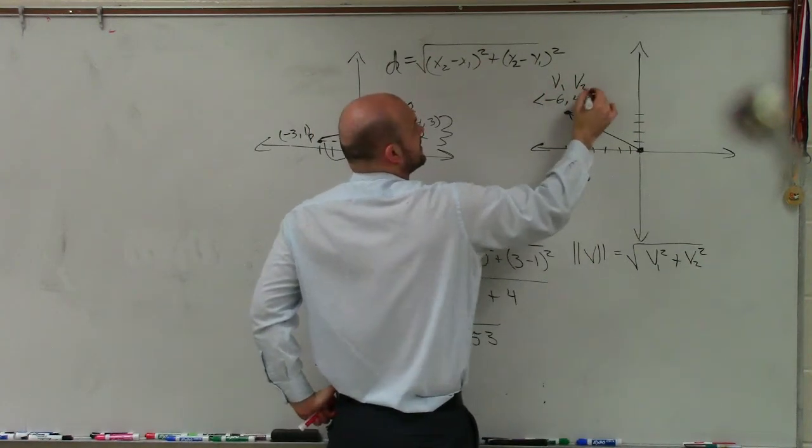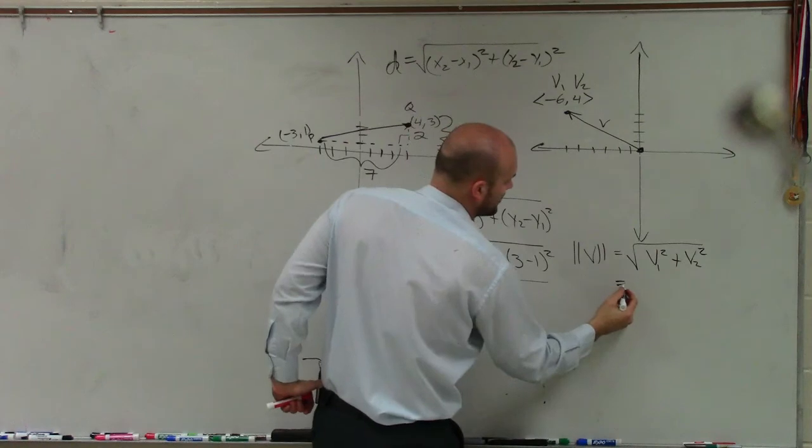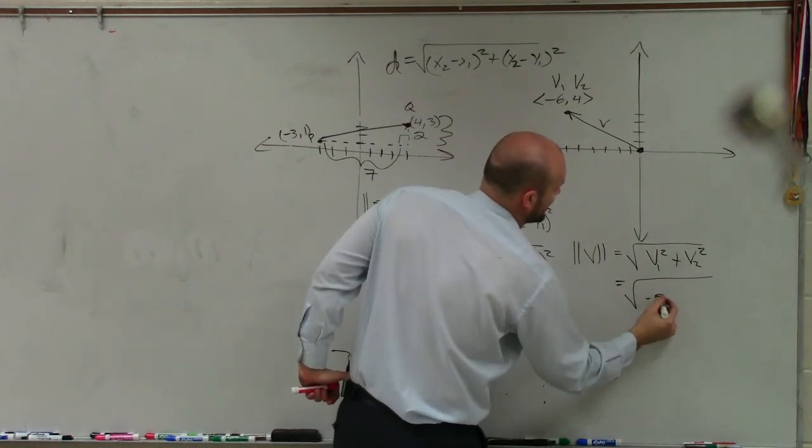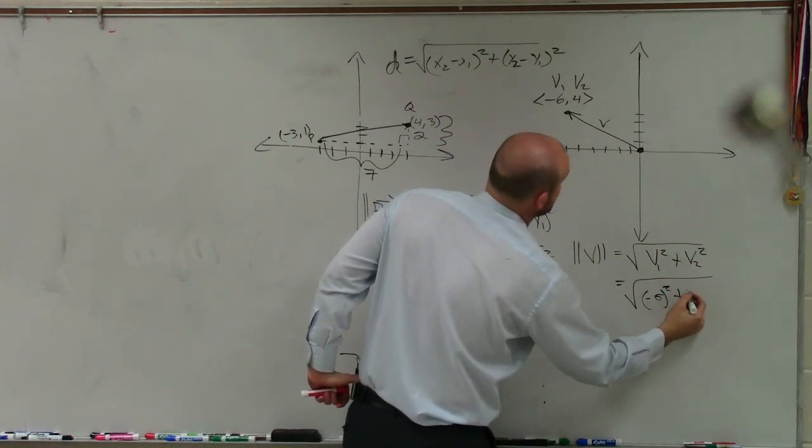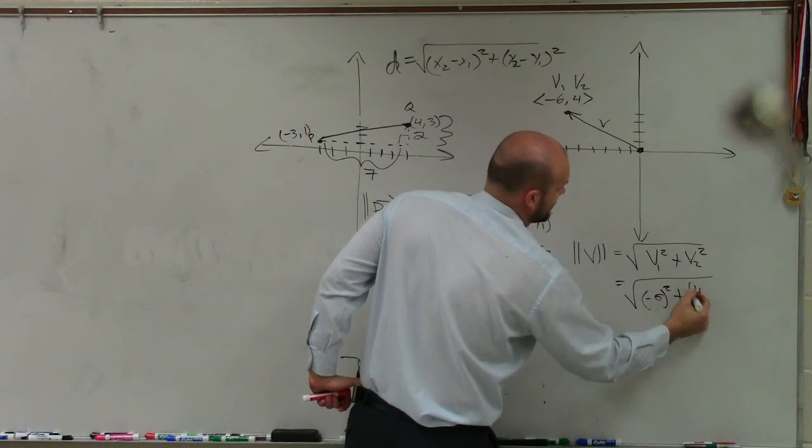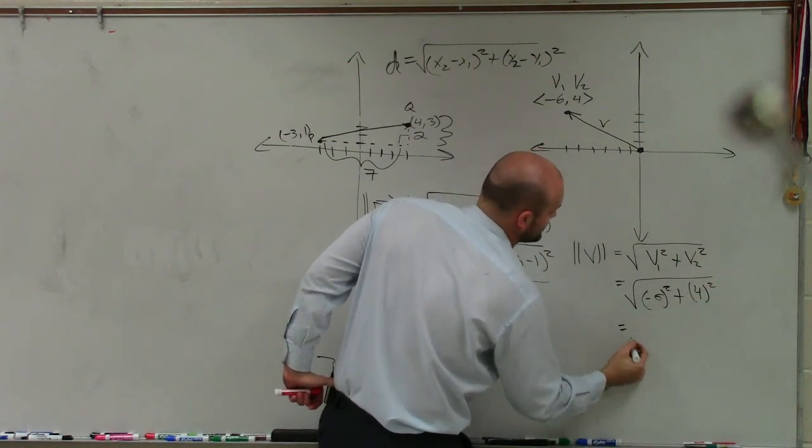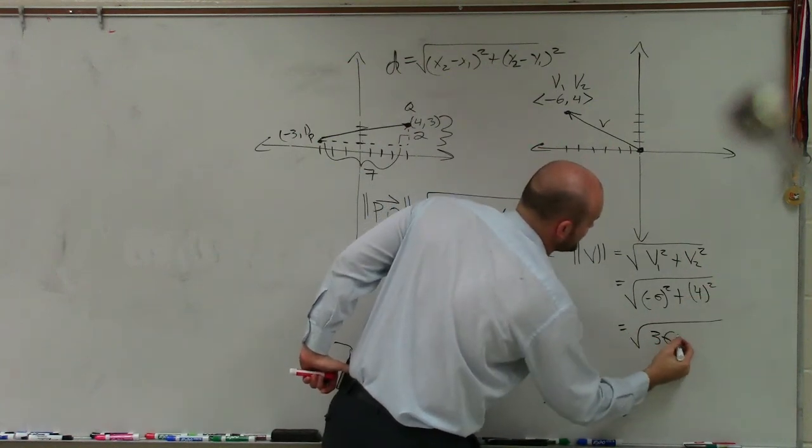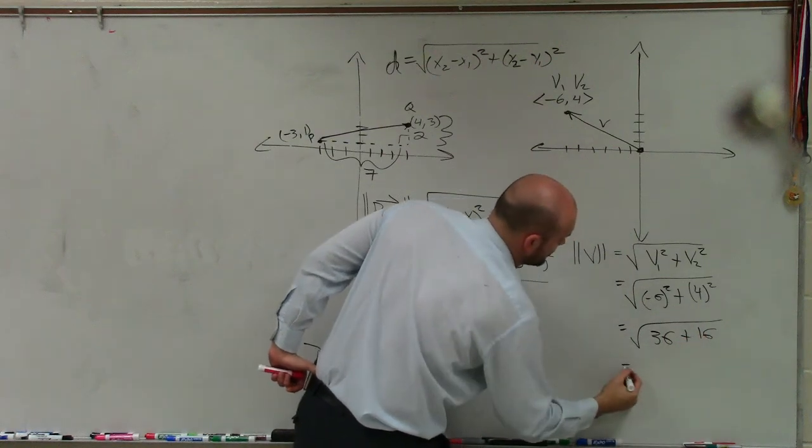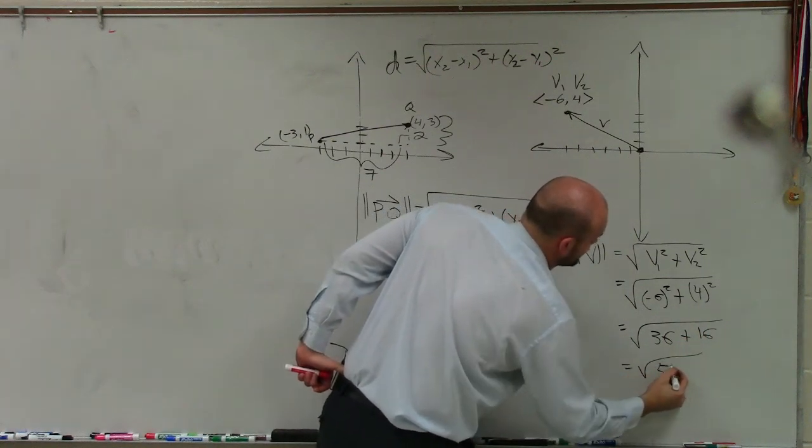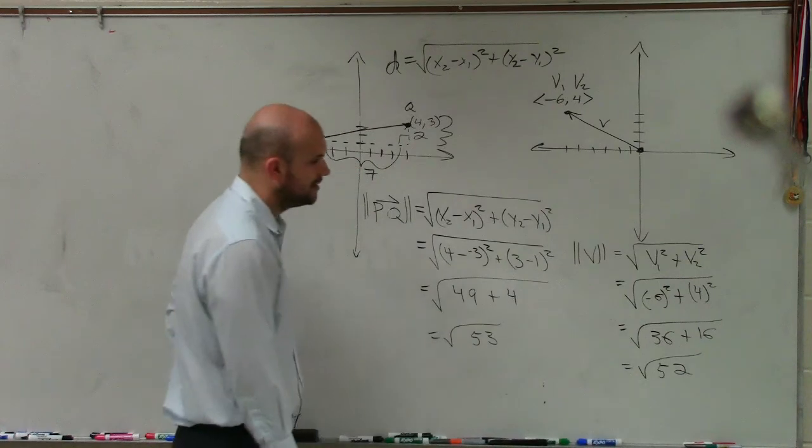So all I need to do here is look at what's my v1 and my v2. Well, v1 is negative 6 and v2 is 4. So therefore, I just take the square root of negative 6 squared plus 4 squared. That equals the square root of 36 plus 16, which equals the square root of 52.